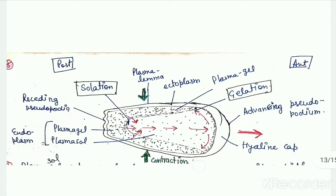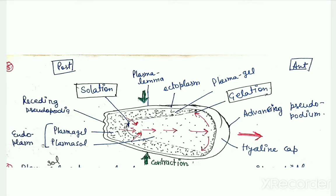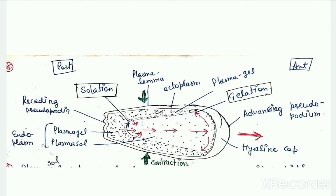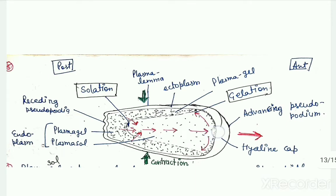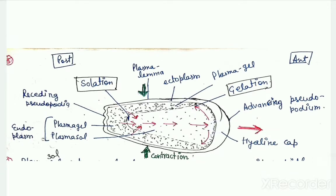This diagram is only of a single pseudopodium. As we already discussed, amoeba can have many pseudopodia at a time, but in this diagram we are only looking at a single pseudopodium. Say this is the direction in which the organism has to move. First, just below the hyaline cap, which is the ectoplasm at the tip of the pseudopodium, this plasma gel undergoes solation, meaning plasma gel converts into plasma sol.